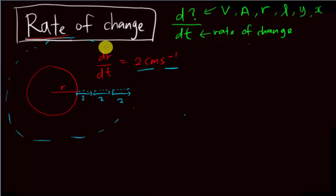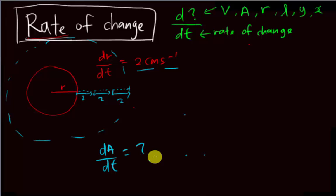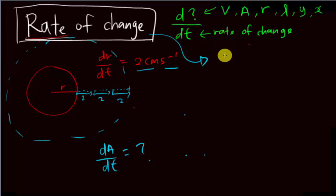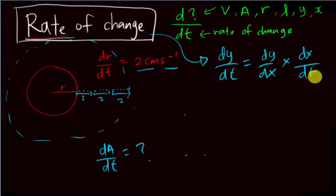If the radius is increasing, of course the area of the circle will also increase. A common question will ask: what is the rate of change of the area? If you know the radius increases 2 cm every second, then how much does the area increase per second? To find dA/dt, this chapter introduces the chain rule: dy/dt equals dy/dx multiplied by dx/dt. The thing you want is dy/dt, and you find the other two pieces from the given information.